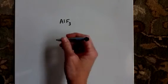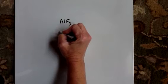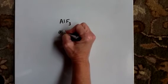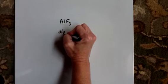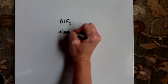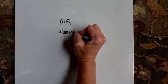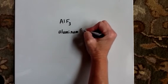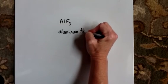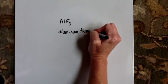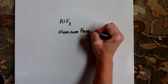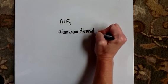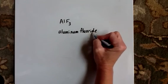If it's ionic, then you don't use those prefixes. You just say the two ions in order: aluminum, fluoride. The last one, you end in "-ide".